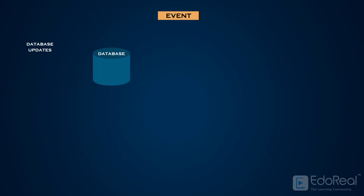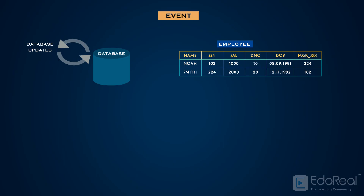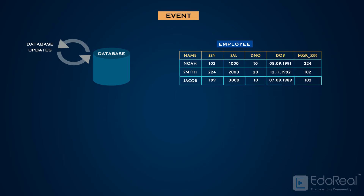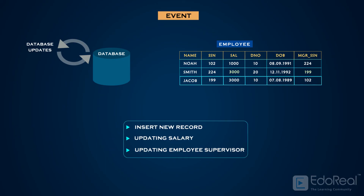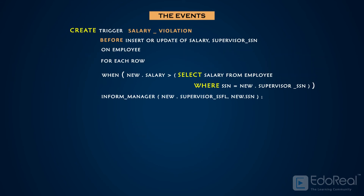The events are database update operations that are explicitly applied to the database. In the example we discussed, the events are inserting a new employee record, changing an employee's salary, or changing an employee's supervisor. The trigger must ensure that all three possible events are accounted for. In our example, the events are specified after the keyword BEFORE.